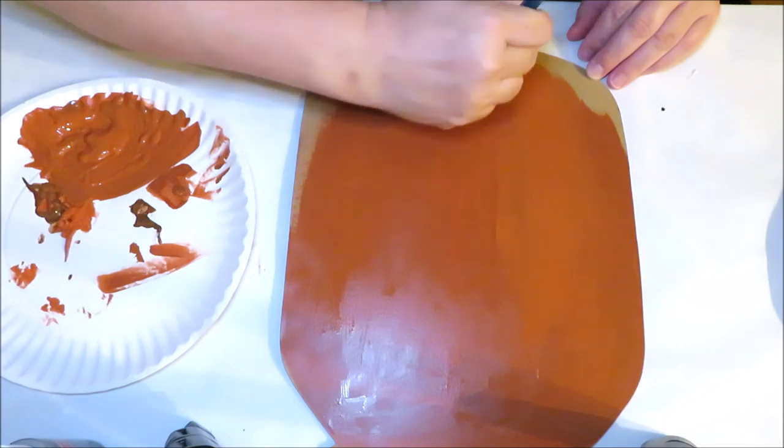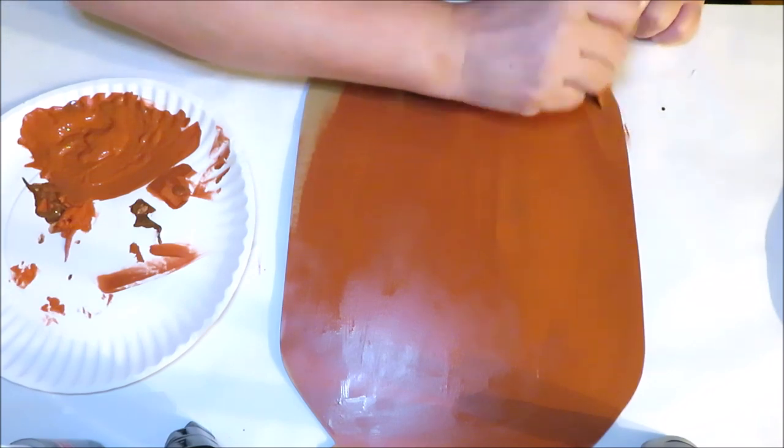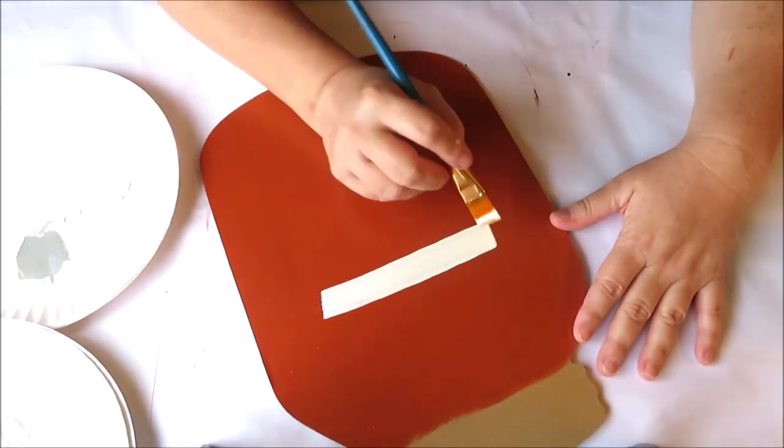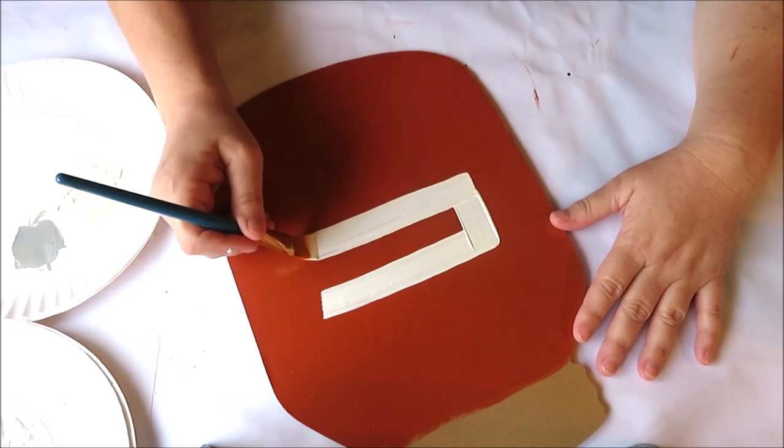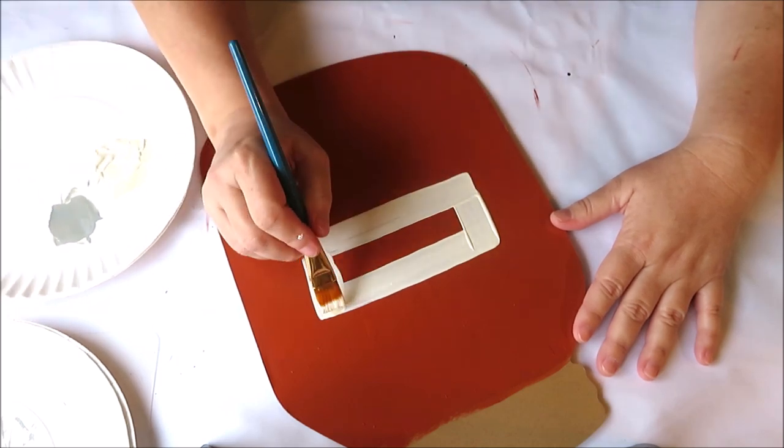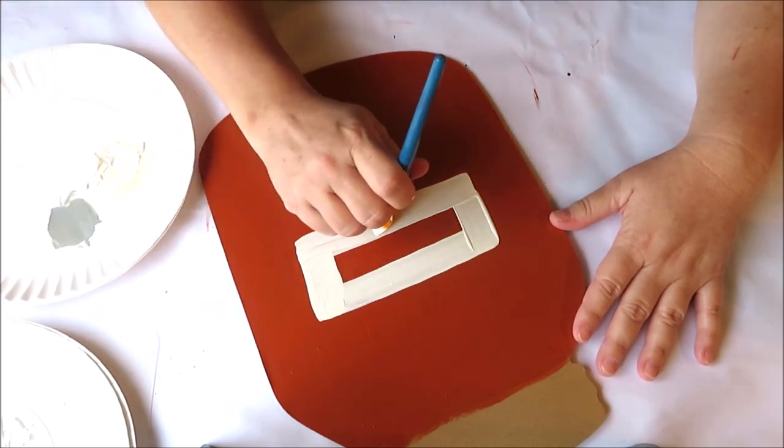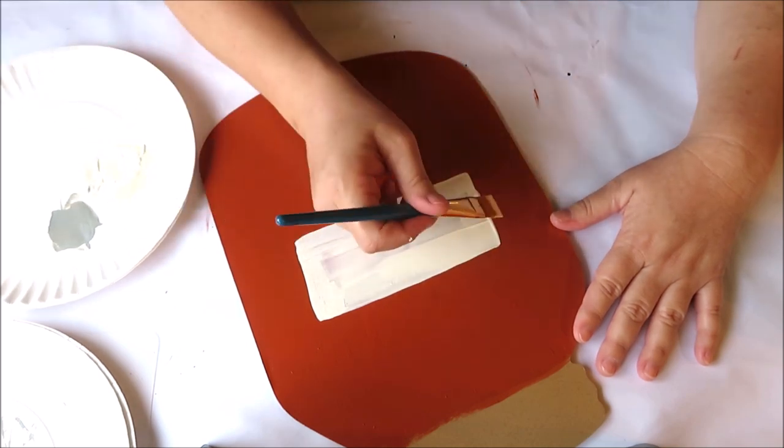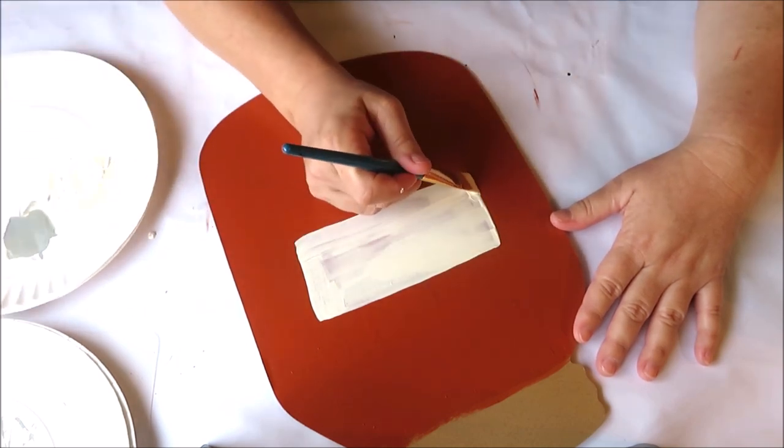Once you've removed your label, you can go ahead and paint your jar of pumpkin in any color you choose. I mixed some orange and brown for the perfect color. Once the orange paint had dried thoroughly, I added an off-white creamy rectangle as our label, letting it dry completely as well.